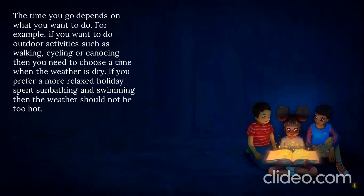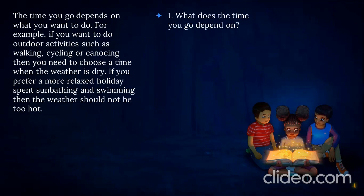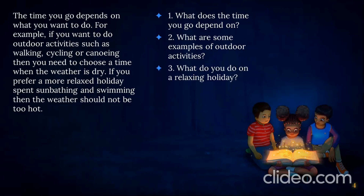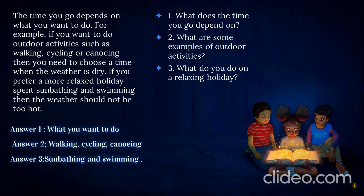Now we have one more example — there's one more passage to skim. 'The time you go depends on what you want to do. For example, if you want to do outdoor activities such as walking, cycling, or canoeing, then you need to choose a time when the weather is dry. If you prefer a more relaxed holiday spent sunbathing and swimming, then the weather should not be too hot.' There are a few questions based on it: What does the time you go depend on? What are some examples of outdoor activities? What do you do on a relaxing holiday?